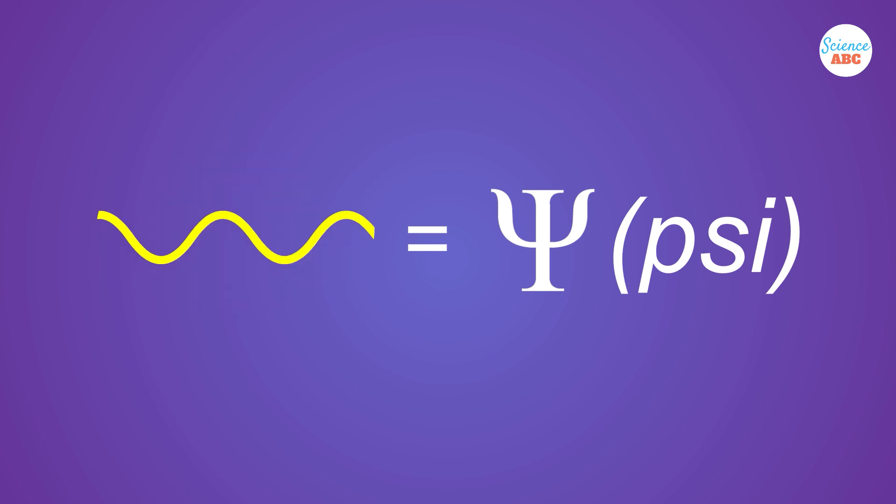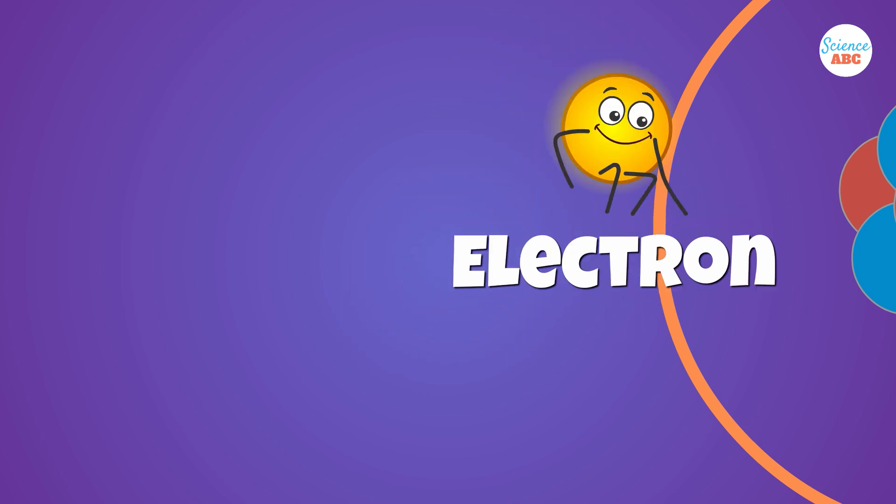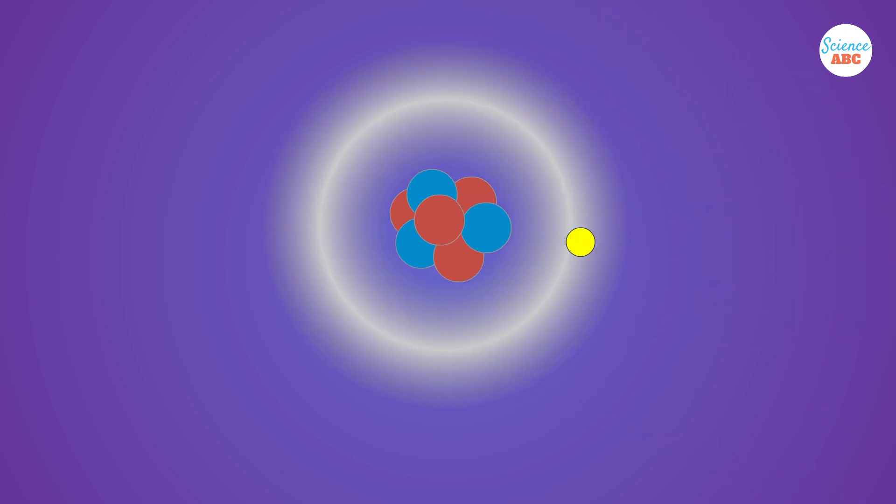It's this matter wave that can be represented mathematically as a wave function. In simple terms, particles such as electrons are not just points in space, but also exhibit wave-like properties.